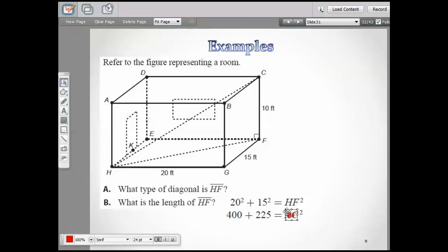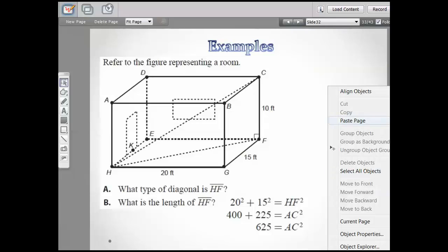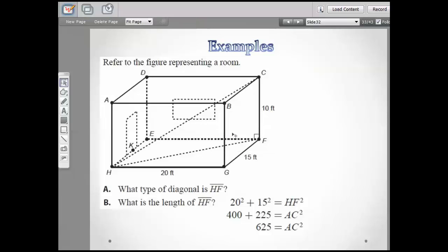So all we have to do is add those two together. Oh, that didn't work the way I wanted it to. That sure did. So 625 is HF squared.